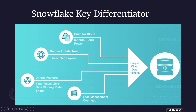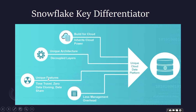There are decoupled independent layers in Snowflake — for example, like a hand and a leg, each working independently. All layers in Snowflake are decoupled and not coupled together. Snowflake also has unique features: time travel lets us query and recover historical data; zero-copy cloning lets us take backups and clone data for testing; data sharing is also available. Additionally, there is less management overhead — everything is managed by Snowflake.